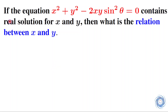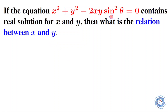Here the question is: if the equation x² + y² - 2xy·sin²θ = 0 contains a real solution for x and y, then what is the relation between x and y? According to the question, this equation has a solution in R, the set of all real numbers, and we have to find the relation between x and y.